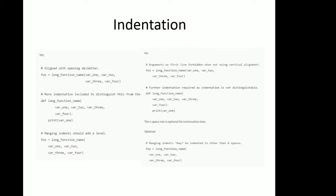Hanging indents should add a level. On that bottom example, when you're talking about a function, if you were to type another line of code, you would not want that to line up with the arguments. So you space the arguments in an extra four spaces so that the arguments to that long function name are distinguishable from the lines of code that follow it.